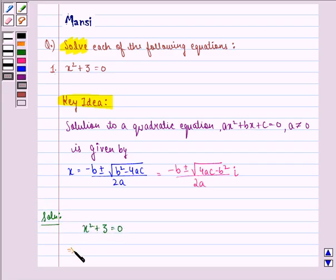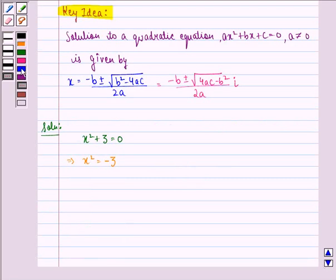This implies x square is equal to minus 3. This implies x is equal to plus minus under the root of minus 3. And this implies x is equal to plus minus root 3 iota.